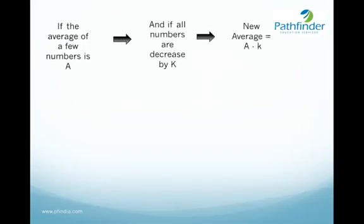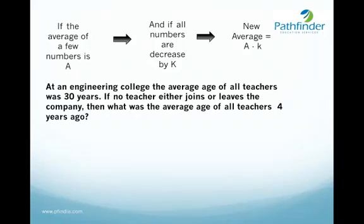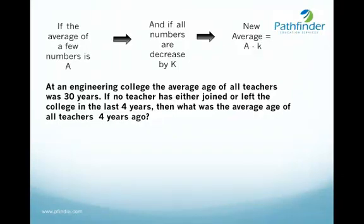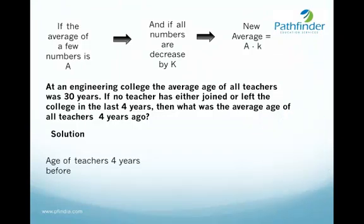Similarly, if the average of a few numbers is A and all numbers decrease by k, then the new average is equal to A minus k. For example, at an engineering college the average age of all teachers was 30 years. If no teacher joined or left in the last four years, what was the average age four years ago? The age of each teacher was less by four years, so the average age four years before is current average minus 4, that is 26 years.